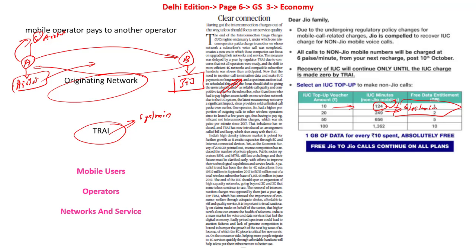What is happening now? These interconnection usage charges will be completely removed. This particular plan was supposed to be implemented in 2020 but was postponed for more than one year, and it will be in practice from 2021. From now on, there will be no interconnection usage charges. If a person calls from Airtel to Jio or from Airtel to Vodafone, there will be no interconnection charges. This means all voice calls going forward will be unlimited and customers will not be charged — what was being charged at 6 paisa per minute will not be charged for all voice calls.